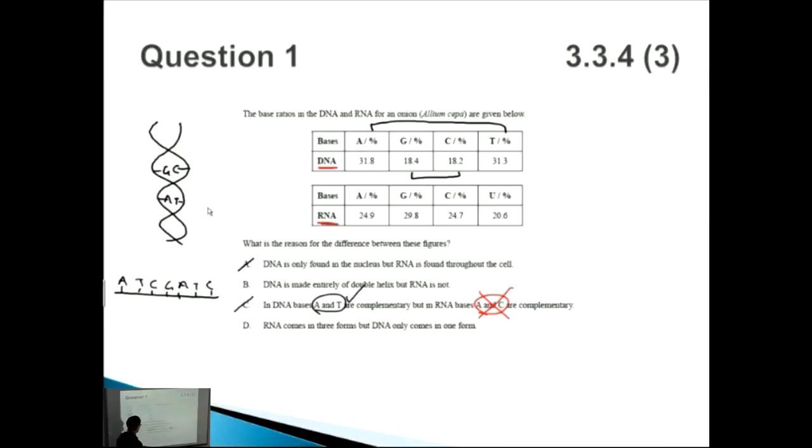How about D? RNA comes in three forms but DNA only comes in one form. Well, RNA does come in three forms - it comes in the form of mRNA, tRNA, the transfer RNA that you use in translation, as well as rRNA. Actually, it mainly comes in two forms, so this answer isn't correct either. So the correct answer is B here.